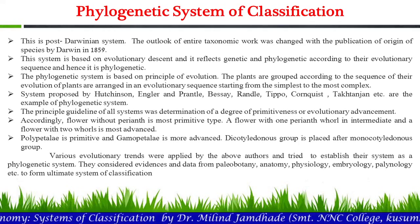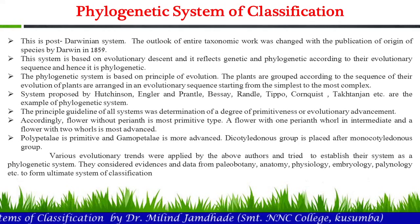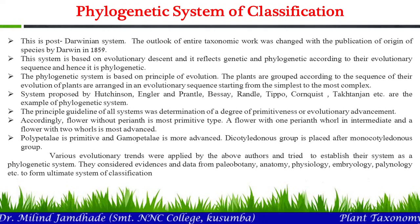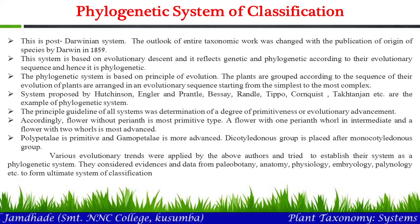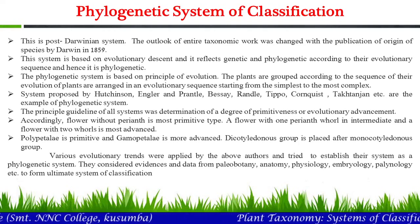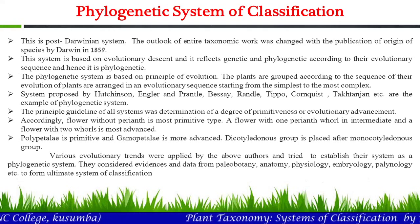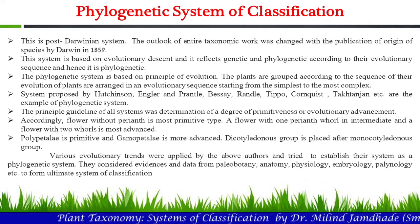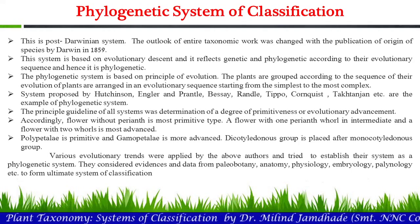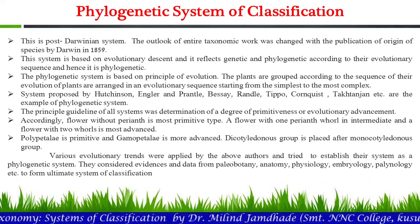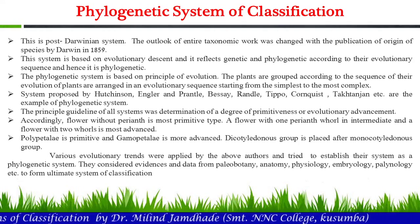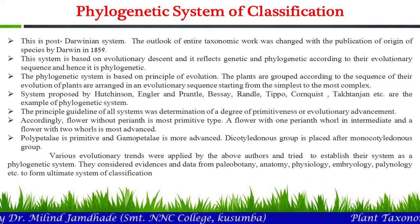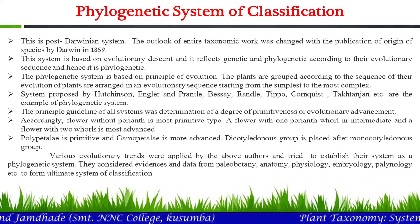The phylogenetic system was proposed by Hutchinson, Engler and Prantl, Bessey, Rendle, Tippo, Cronquist, Takhtajan, and others. These are the names that contributed to the phylogenetic system of classification. The principal guideline of this system was the determination of the degree of primitiveness and evolutionary advancement.